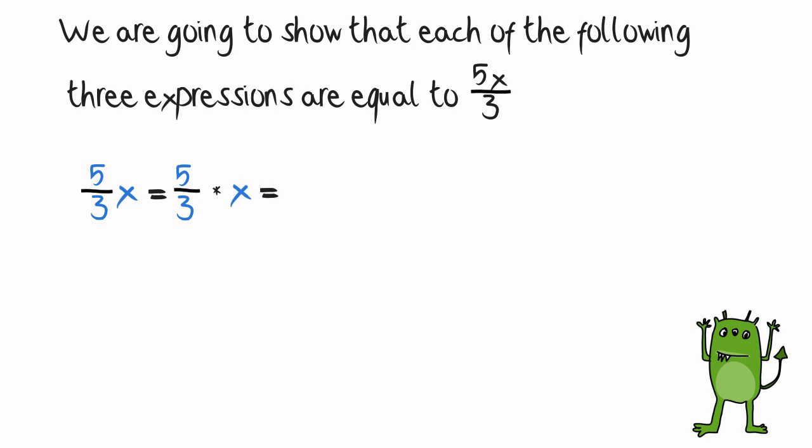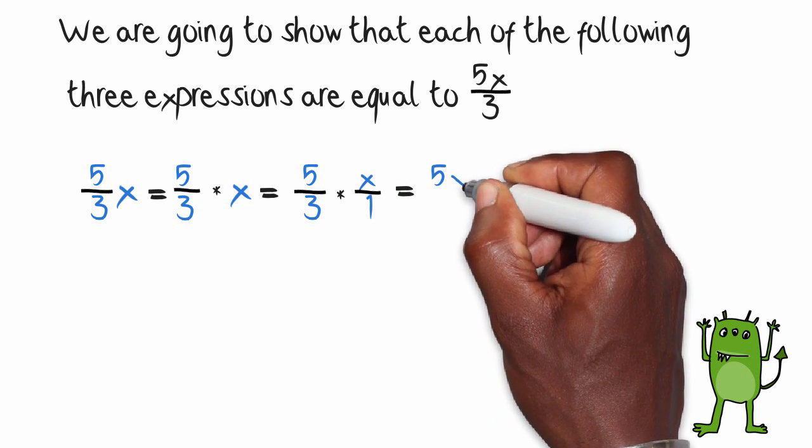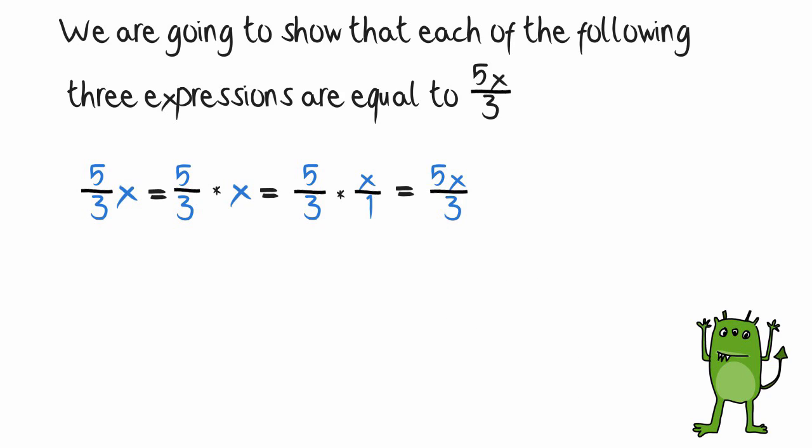And how do we multiply a fraction by an unknown number? By turning that unknown number into a fraction. That x is now going to become x over 1, and all we have to do is multiply straight across. 5 times x is 5x, 3 times 1 is 3, and there we have 5x over 3.